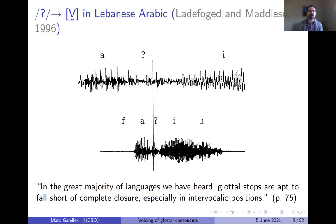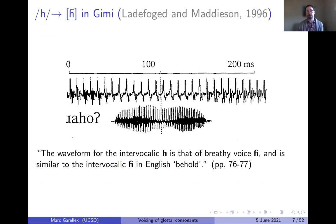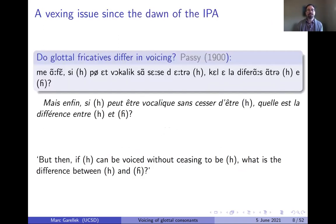In a famous quote by Ladefoged and Maddieson, they say that 'in the great majority of languages we have heard, glottal stops are apt to fall short of complete closure, especially in intervocalic positions.' The same is true for voiceless H. Ladefoged and Maddieson provide an example from Gimi, a Papuan language, of an intervocalic H realized with continuous voicing throughout. This issue of systematic voicing of voiceless glottal consonants has been a vexing issue since the early days of the IPA.